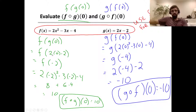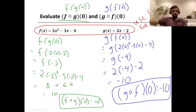Before using it as input for f, we simplify: 2 times 0 minus 2 equals negative 2. Then f of negative 2 uses our f function, 2x squared minus 3x minus 4, with input negative 2. We get 2 times negative 2 squared, minus 3 times negative 2, minus 4. That gives us 8 plus 6 minus 4, which equals 10. So f of g of 0 equals 10.